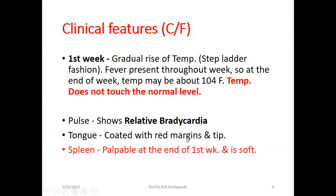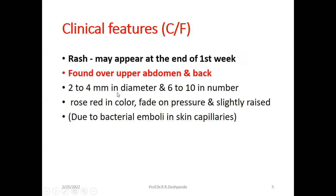The tongue is coated with red margins and tip. Spleen is palpable — splenomegaly — at the end of the first week, and the spleen is soft. A rash may appear at the end of the first week — it is not compulsory. The typhoid rash appears over the upper abdomen and back region, is 2 to 4 mm in diameter, 6 to 10 in number, rose-red in color, fades on pressure, and is slightly raised. This rash is caused by bacterial emboli in skin capillaries.